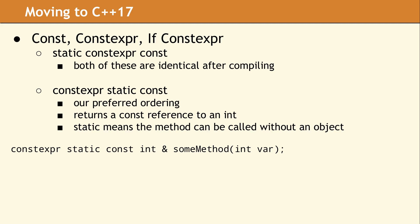The example shows a declaration of a method which can be called at compile time because of the constexpr keyword. The static keyword means the method can be called without having an instance of the class. The const parses as part of the return type, so this method will return a const reference to an int.